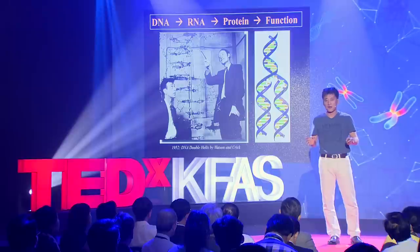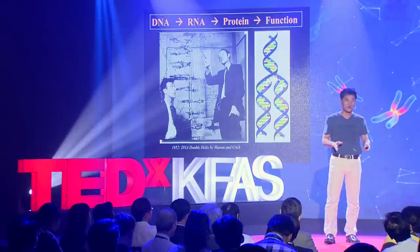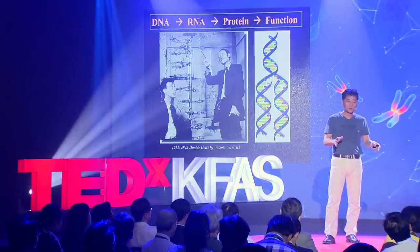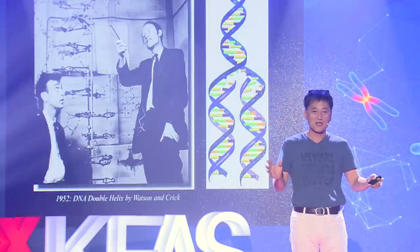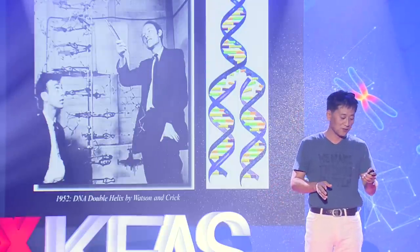In biology, it's very hard to find a principle. DNA is the blueprint of our life that transcribes into RNA, and RNA is the messenger that translates into a protein. Protein is the component that circulates within your body to perform certain functions. This central dogma is unshaken, and it's going to be the principle of life.